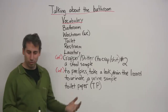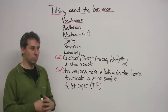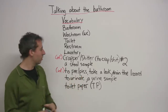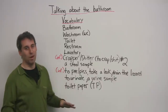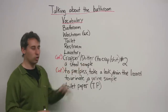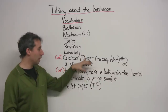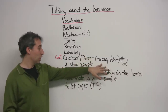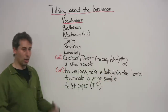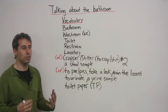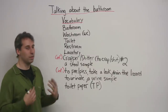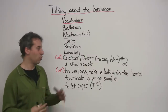I would not use 'crapper' or 'shitter' in a classroom, for example. Do not say 'Excuse me, can you tell me where the crapper is?' — that is for you and your friends only. It's very informal. The verbs are 'to crap' and 'to shit.' You might say, 'Hey, I gotta take a shit' — maybe you're in a panic — but again, this is informal, just with your friends.